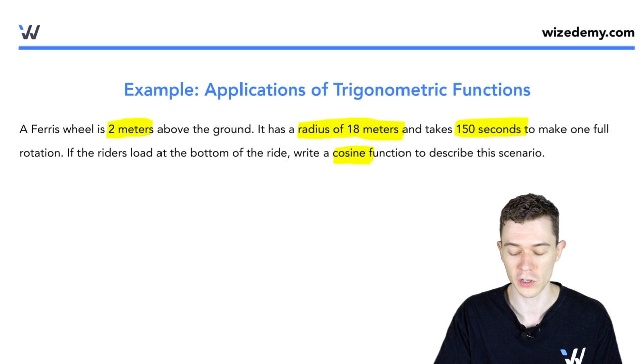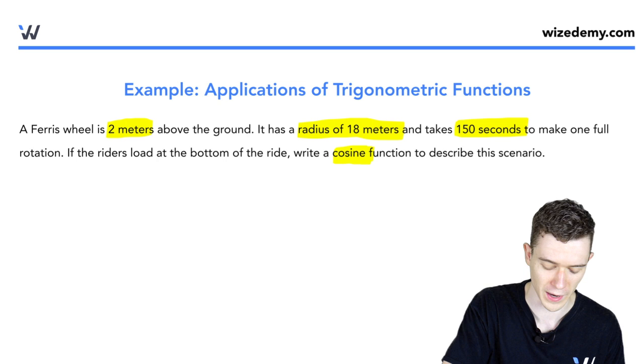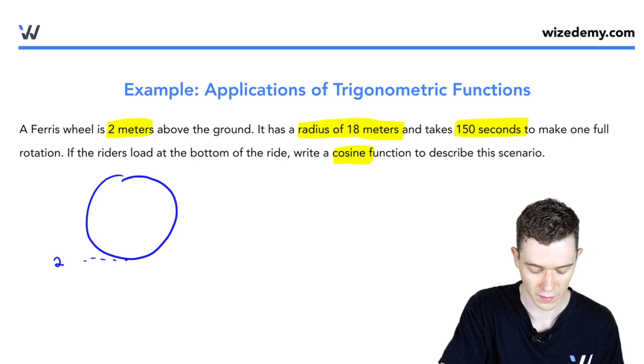Alright, well maybe we could draw it. That might help us. Ferris wheel is a circle and it's two meters above the ground. So if we wanted to draw some sort of axis here, its lowest y value would be 2.